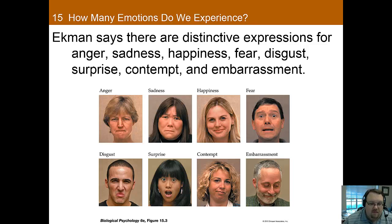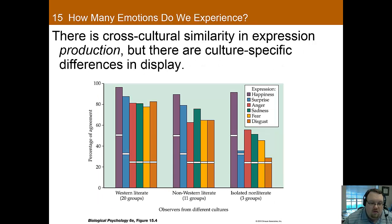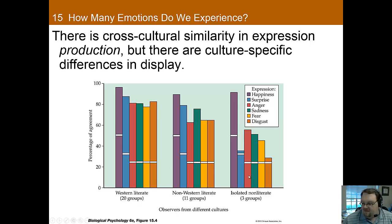What do the data say? While there is significant agreement across cultures, one problem is that isolated, illiterate groups seem to define fear and disgust differently than Westerners. Each group looked at pictures in the study and was asked to pick the emotion being displayed. The white bar on the graph signifies chance. In the isolated, non-literate groups, emotions like surprise, disgust, and fear are not very far above chance — certainly much less than what you see in the Western literate group.